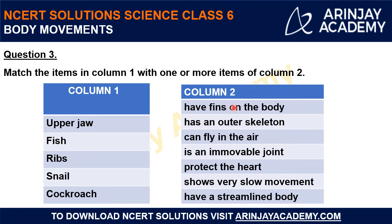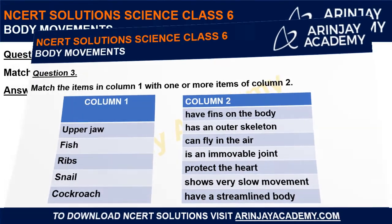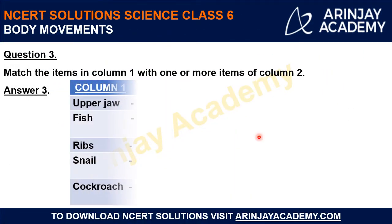Column 2 has: have fins on the body, has an outer skeleton, can fly in the air, is an immovable joint, protect the heart, shows very slow movement, have a streamlined body. Take your time, think carefully and try to match each item.